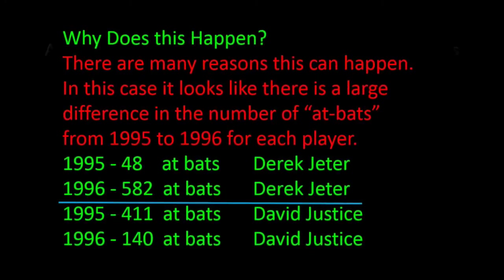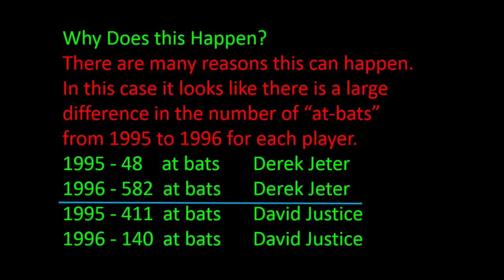This is a great example of when data is looked at one way — broken down — and then the very same data is looked at in a combined or aggregated way, and the results are different. The answer is different for different situations, so you have to look at the original data more closely. In this case, there's a big difference in at-bats between the years: Derek Jeter had only 48 at-bats in his rookie year and 582 the following year, while David Justice also had a large difference. This phenomenon is called Simpson's paradox.